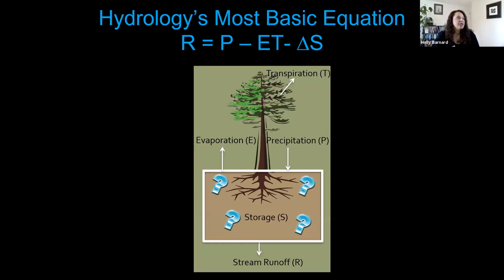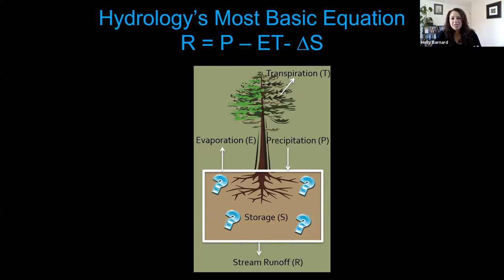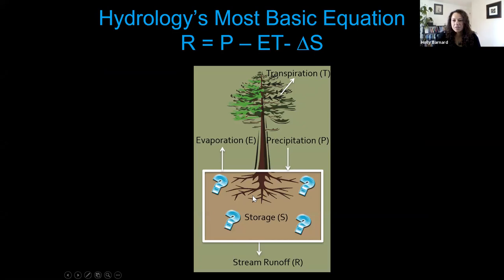As an eco-hydrologist, I think about how trees interact with the subsurface. We can look at hydrology's most basic equation — the water balance equation. Stream flow R equals precipitation inputs minus evapotranspiration outputs minus change in storage. What I'm interested in is quantifying this transpiration rate, but what the critical zone has really done for me is pushed me to think about this interaction with storage — how differences in subsurface storage affect both the tree and the stream.